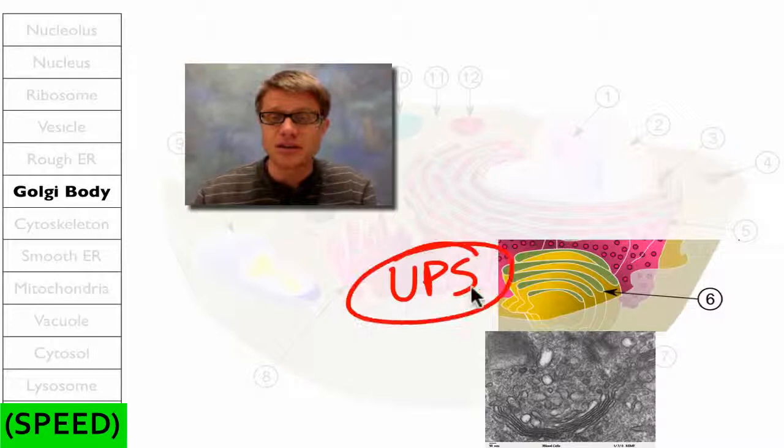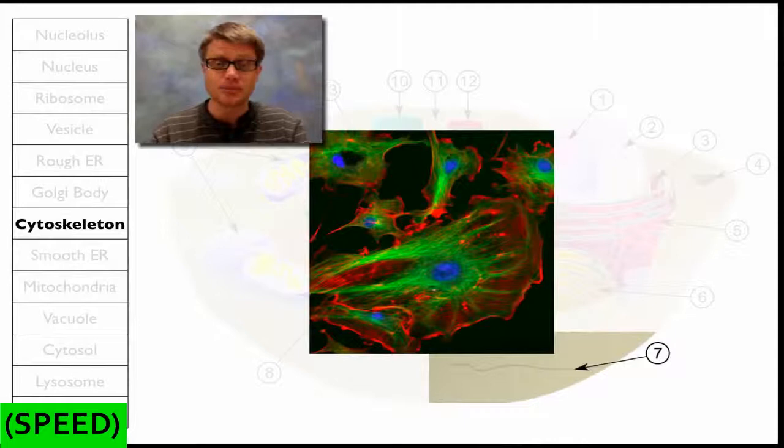Another way to think about that is it's like a UPS. In other words, it is a shipping part of the cell. Things come in as a transport vesicle, they're going to go out as a transport vesicle, and they're going to go where they need to go within the cell.